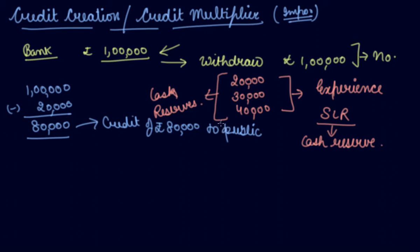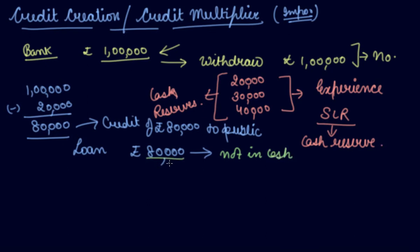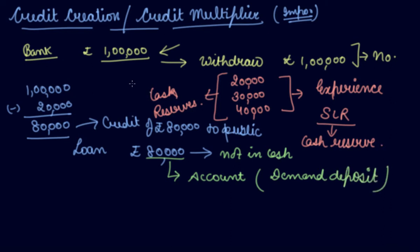Now how does the bank give credit to the public? If you take a home loan, the amount of rupees 80,000 is not given directly in cash. If you take a loan from the bank, the bank will deposit this 80,000 in your account as a demand deposit. So again there is a deposit — once there was a deposit of 1 lakh, now again there is a deposit of rupees 80,000 with the bank as a demand deposit.